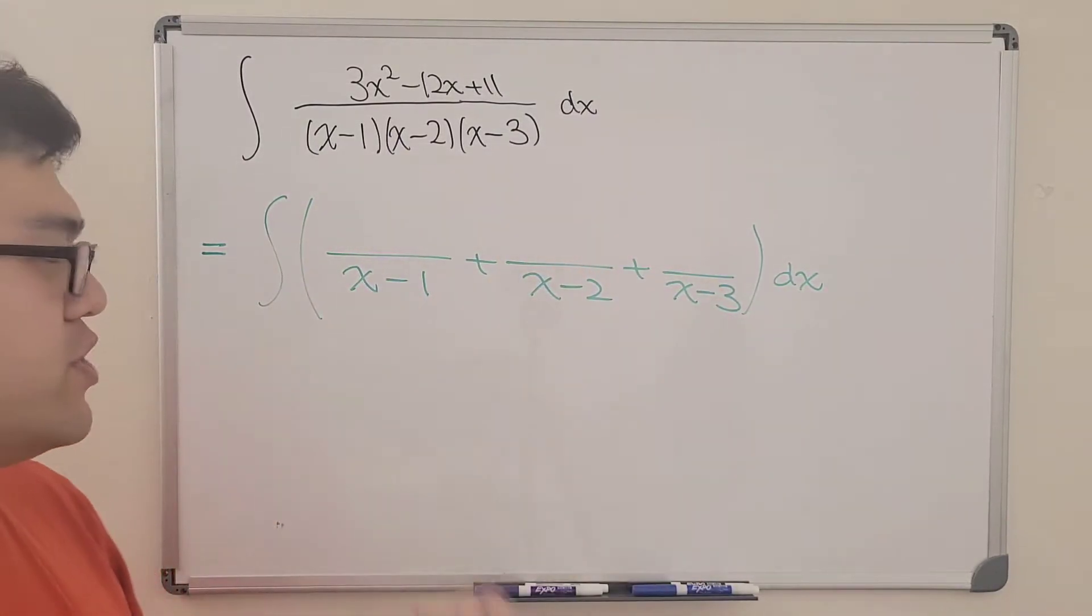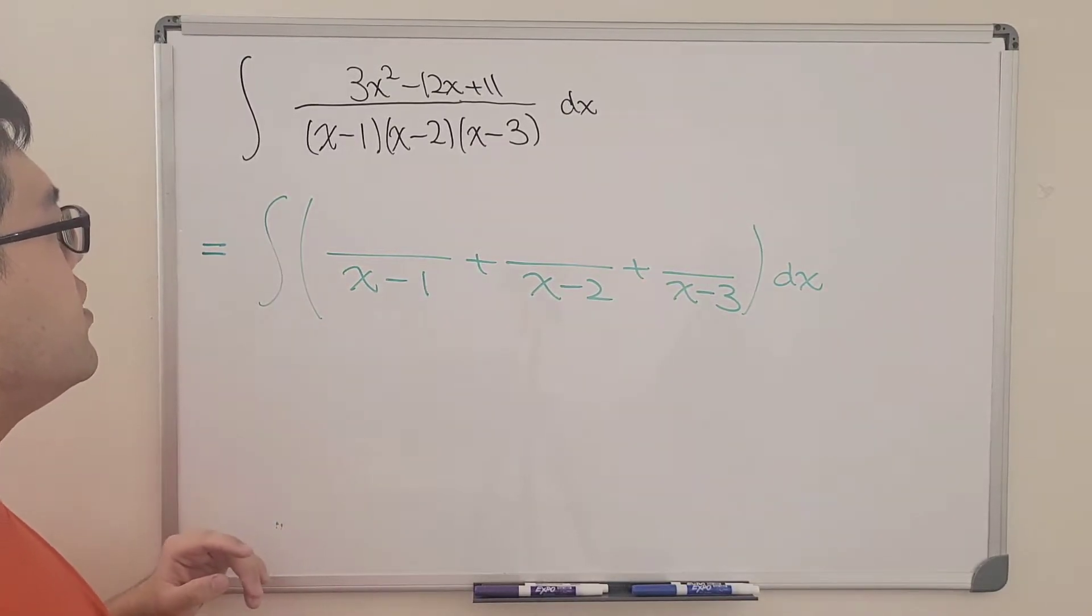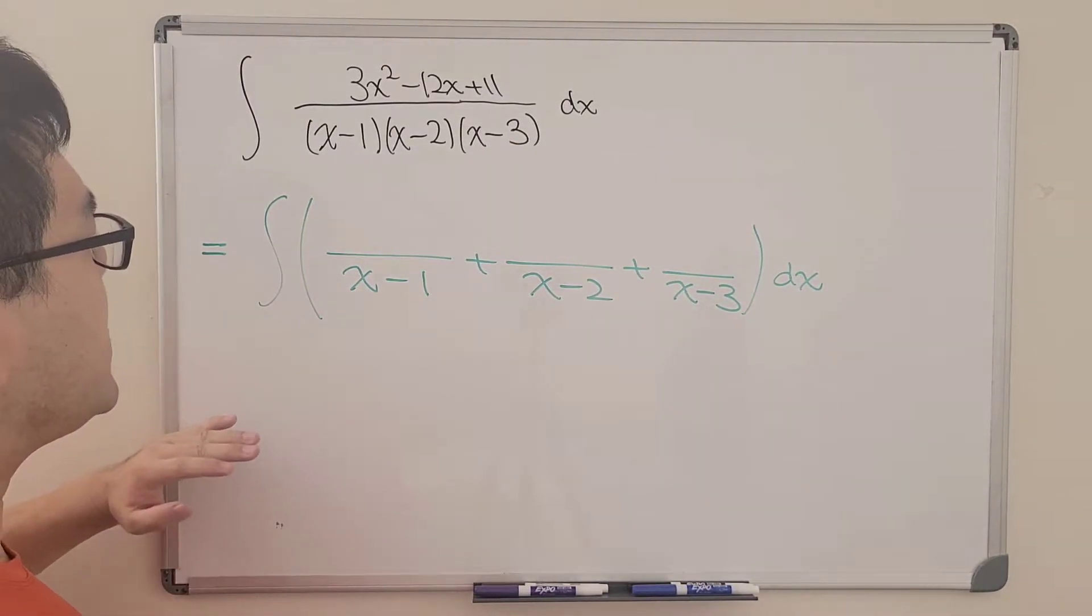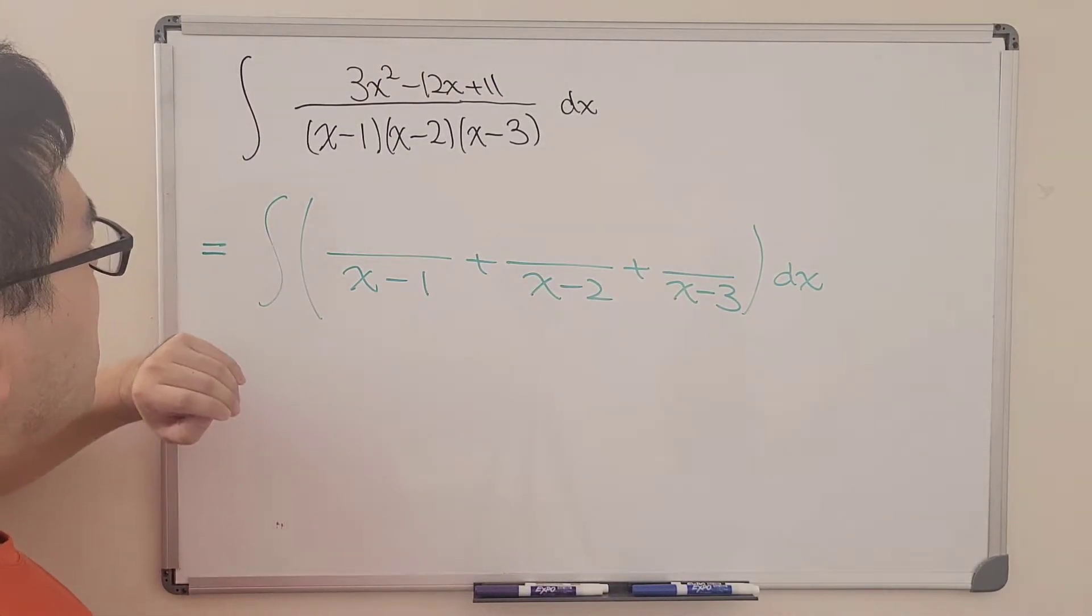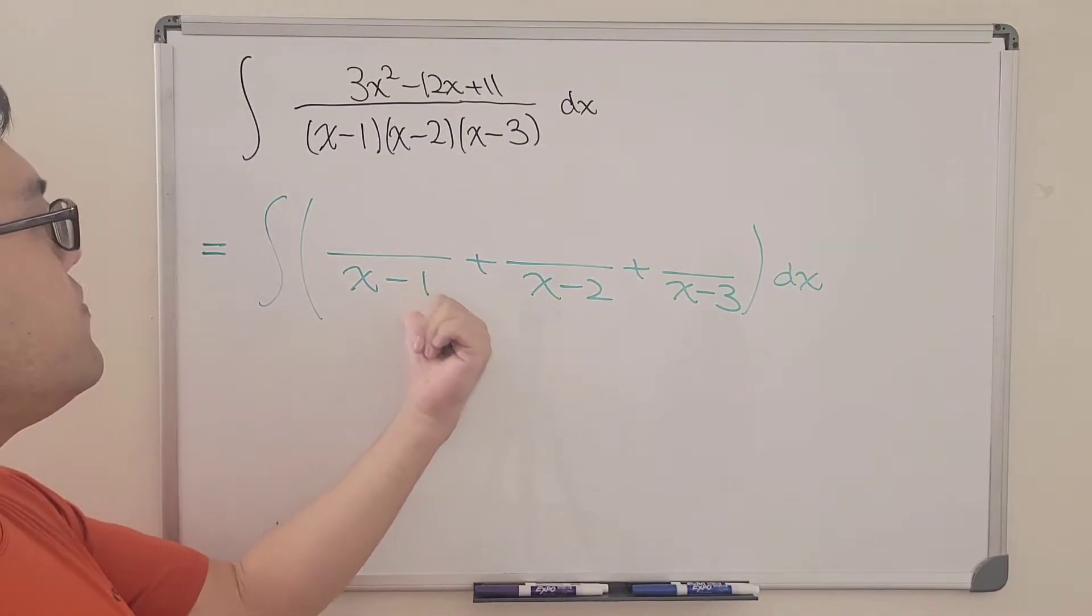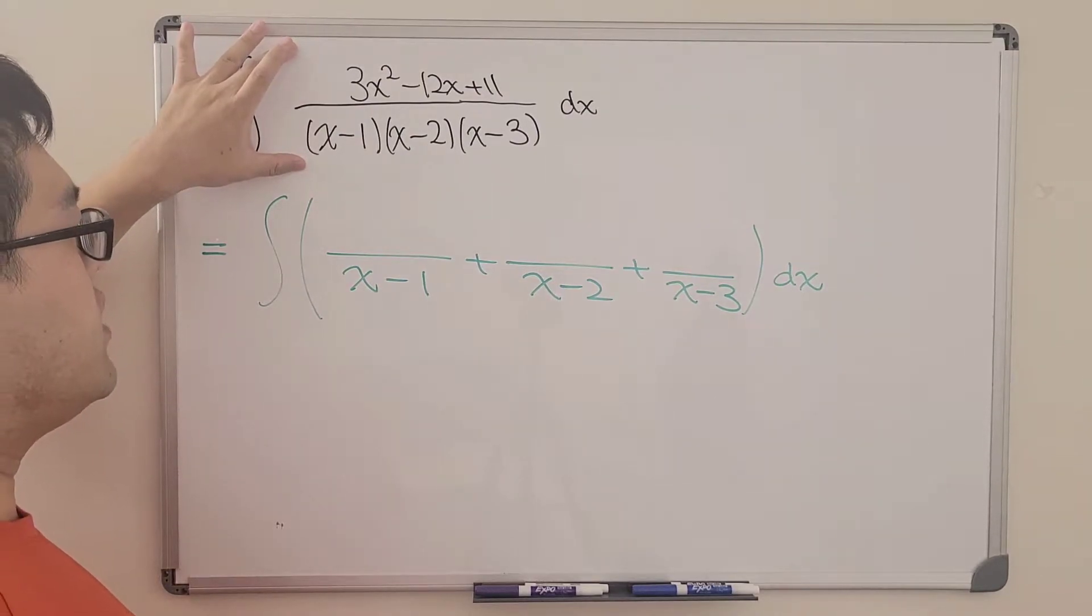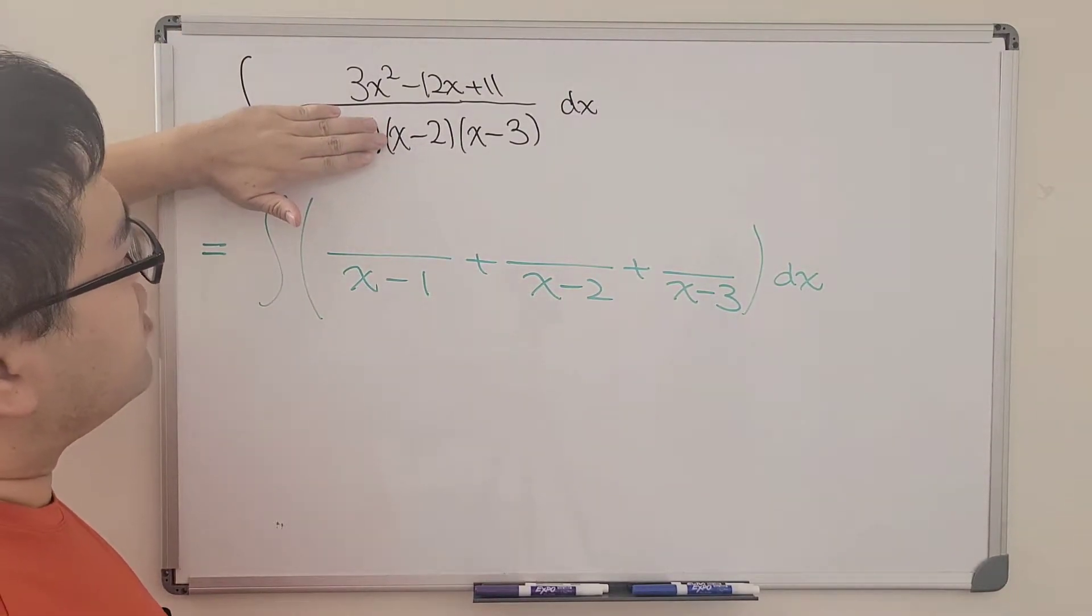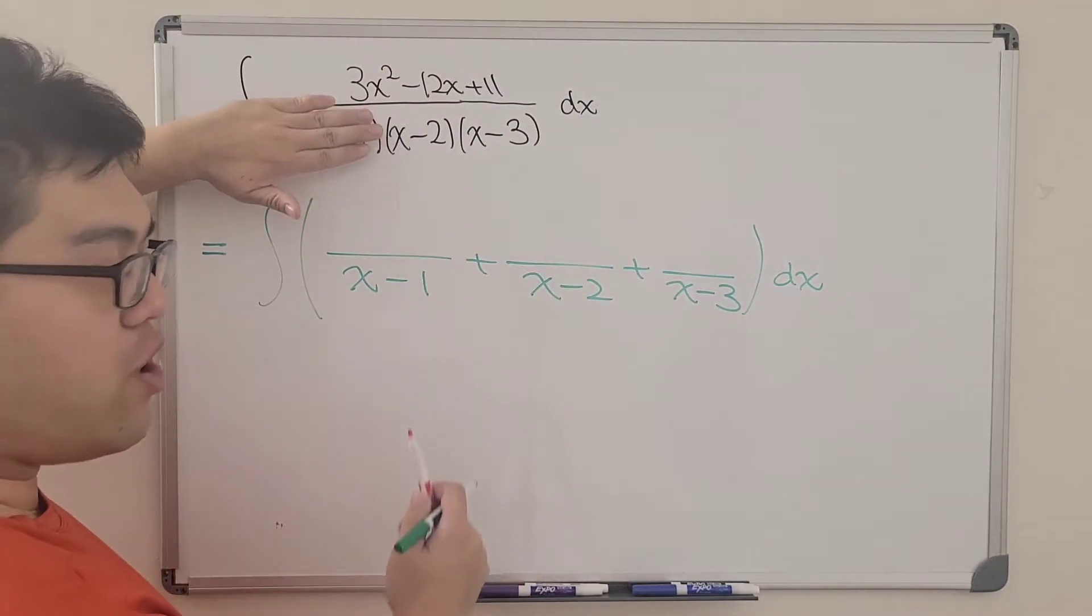Something over x minus 1 plus something over x minus 2 plus something over x minus 3. Now for the partial fraction, after we write out our denominators, of course we need to figure out what we should put on the top of each fraction. So let's use the most handy method that we probably have known, which is called the covering method. What does that do? Or how does it work?